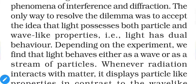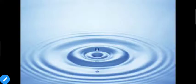The only way to resolve the dilemma was to accept that light possesses both particle-like and wave-like properties — that is, light has dual behavior. A simple example of a wave is when we disturb a calm water surface: when a drop of water falls on the surface, it creates this type of motion which is known as waves.